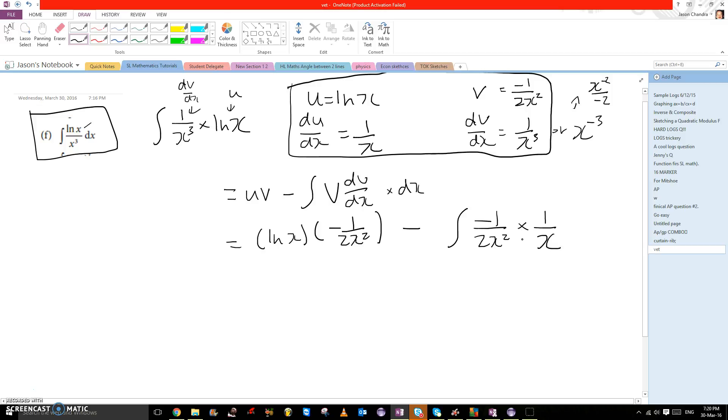We can multiply these two together, which gives minus 1 over 2x cubed. This can be rearranged in the form of minus 2x to the power of negative 3.